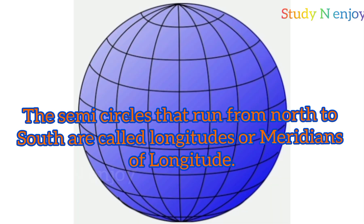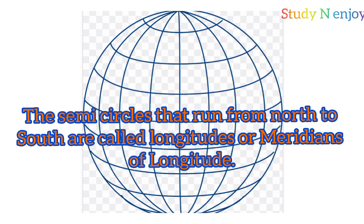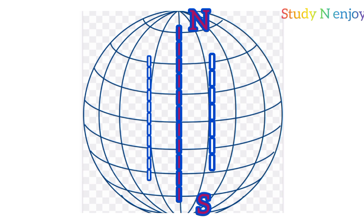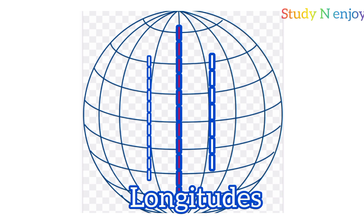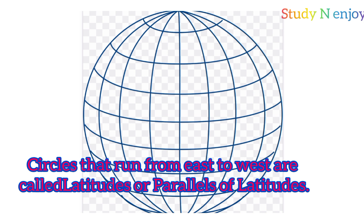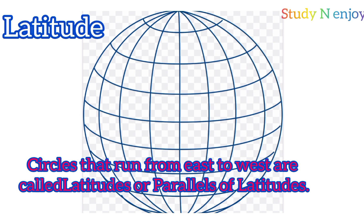The point at the top is called the north pole and the point at the bottom is called the south pole. A set of circles and semicircles can be seen on the surface of the globe. The semicircles that run from north to south are called longitudes or meridians of longitude. The circles that run from east to west are called latitudes or parallels of latitudes.